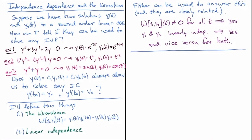The conclusions we can draw are as follows. If the Wronskian is not equal to zero for any t — meaning there's no t for which it equals zero — then yes, c1·y1 + c2·y2 is a general solution. We can also check if y1 and y2 are linearly independent, and if they are, again we have a yes. Vice versa: if the Wronskian is zero everywhere, those two solutions cannot be combined to form a general solution. And if y1 and y2 are linearly dependent, we can't solve any initial condition with that expression.